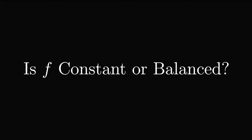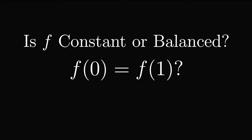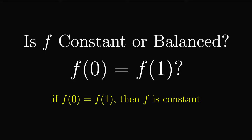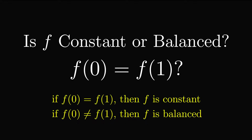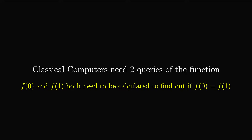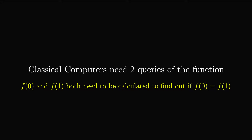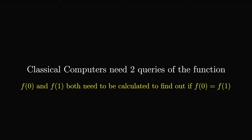If we want to find out if a function is constant or balanced, we can reframe this problem into figuring out if f(0) equals f(1), since if the function is constant, this will hold true. Whereas if the function is balanced, f(0) will not equal f(1). For a classical computer, the number of calls needed to the function to solve the problem is 2 — both f(0) and f(1) need to be calculated, so both 0 and 1 need to be input, taking two calls of the function.